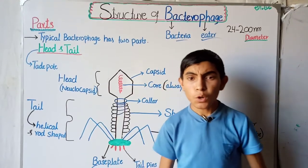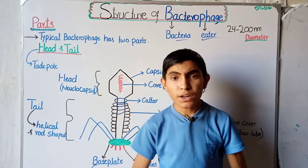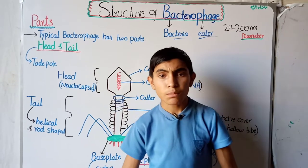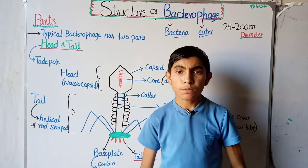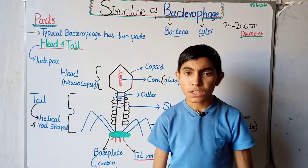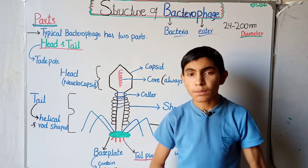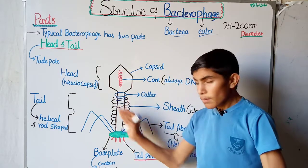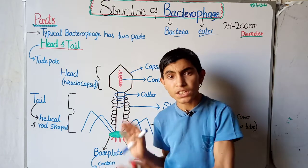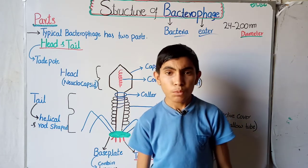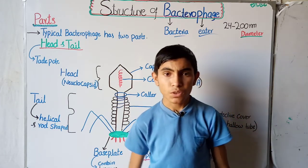So this was about the structure of the bacterial bacteriophage virus. I hope this will be helpful to you. If you have any questions, please mention them in the comments. In the next lecture we will talk about the life cycle of this bacterial bacteriophage — how it increases its number. I hope this will be helpful; see you next time.